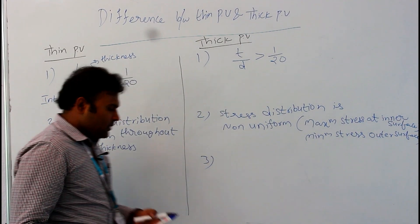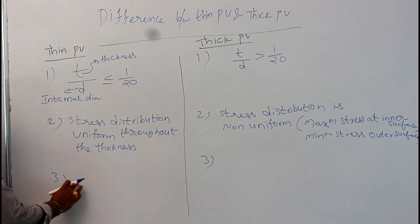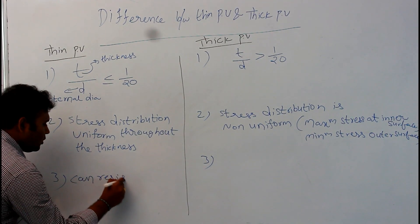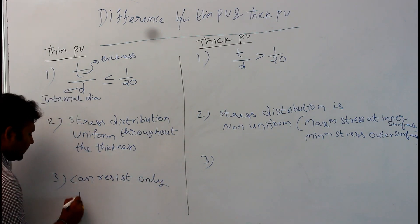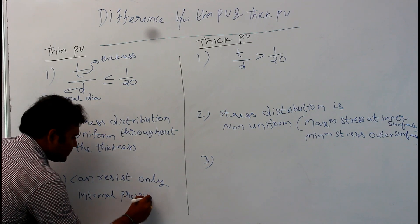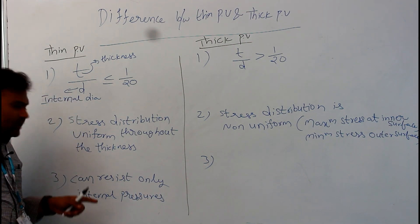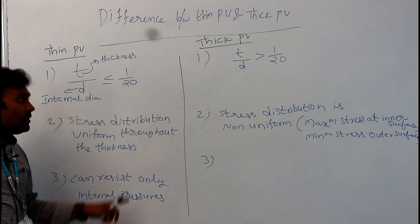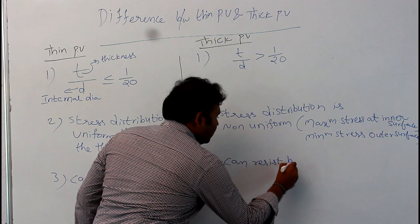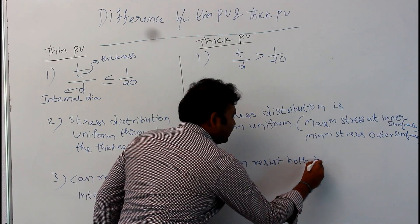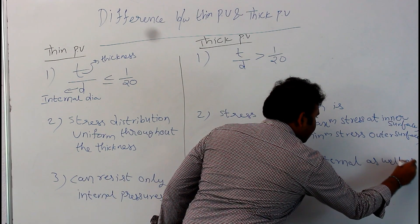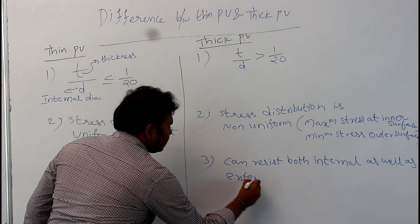One more difference: thin pressure vessels can resist only internal pressures, whereas thick pressure vessels can resist both internal as well as external pressures.